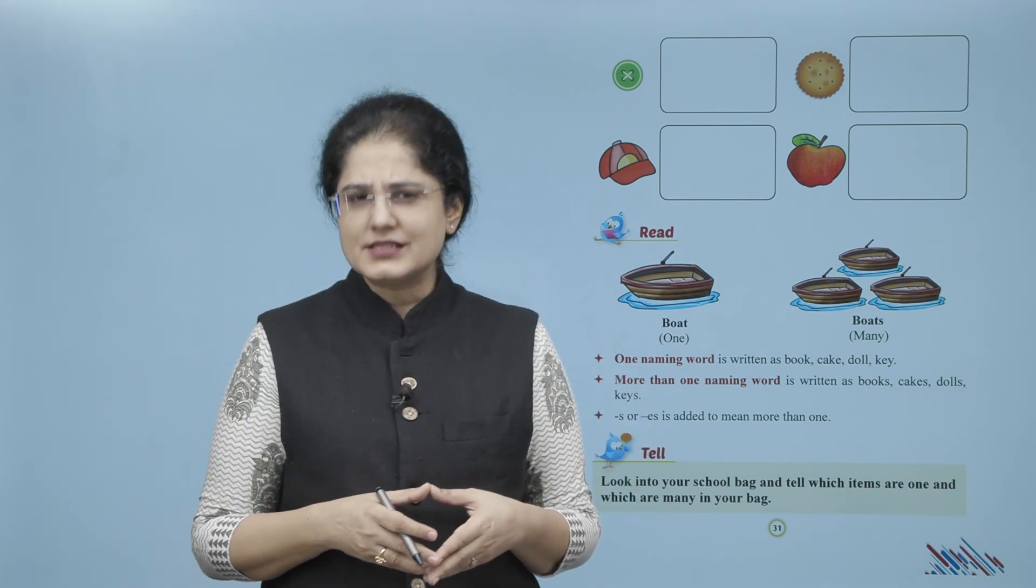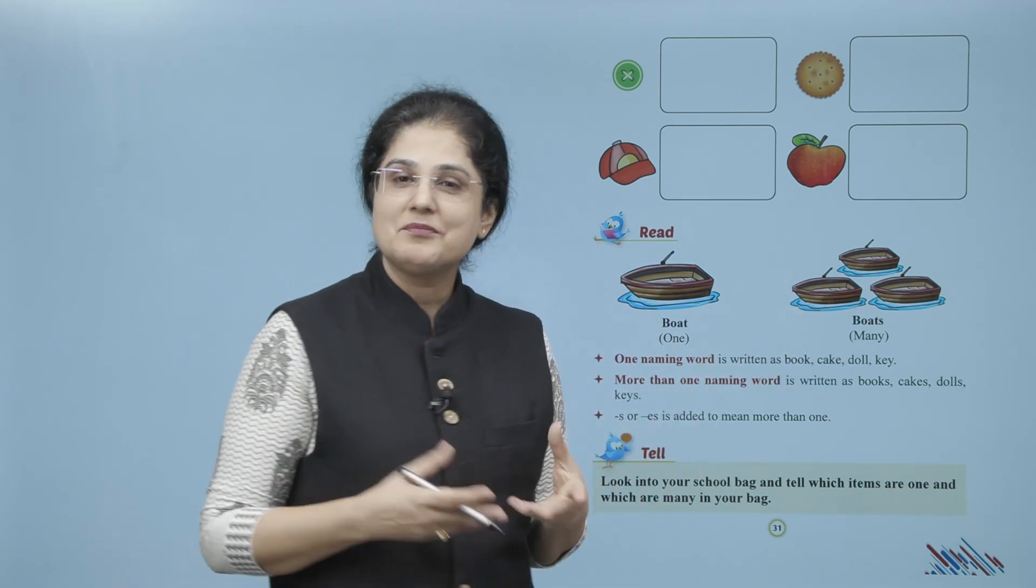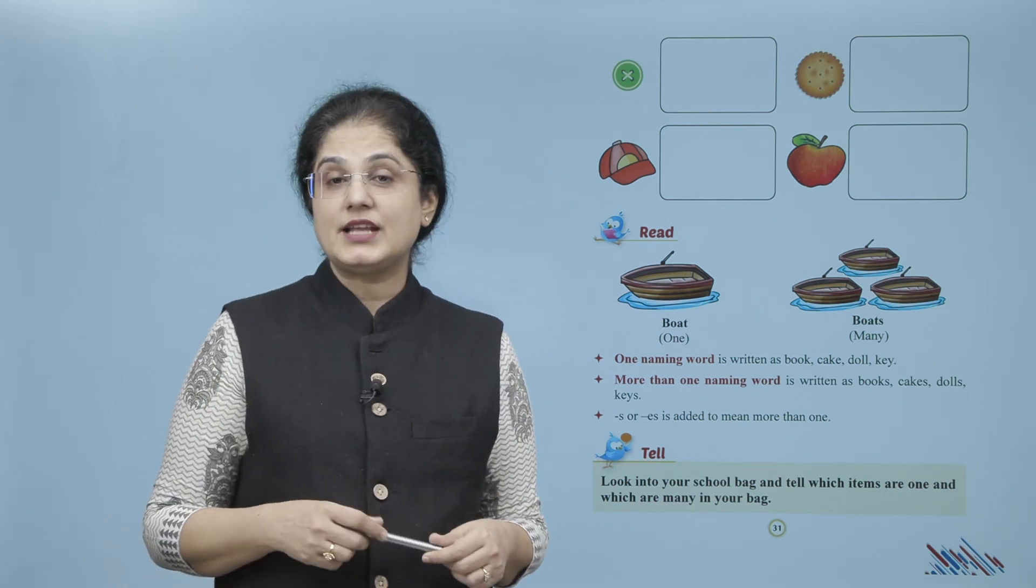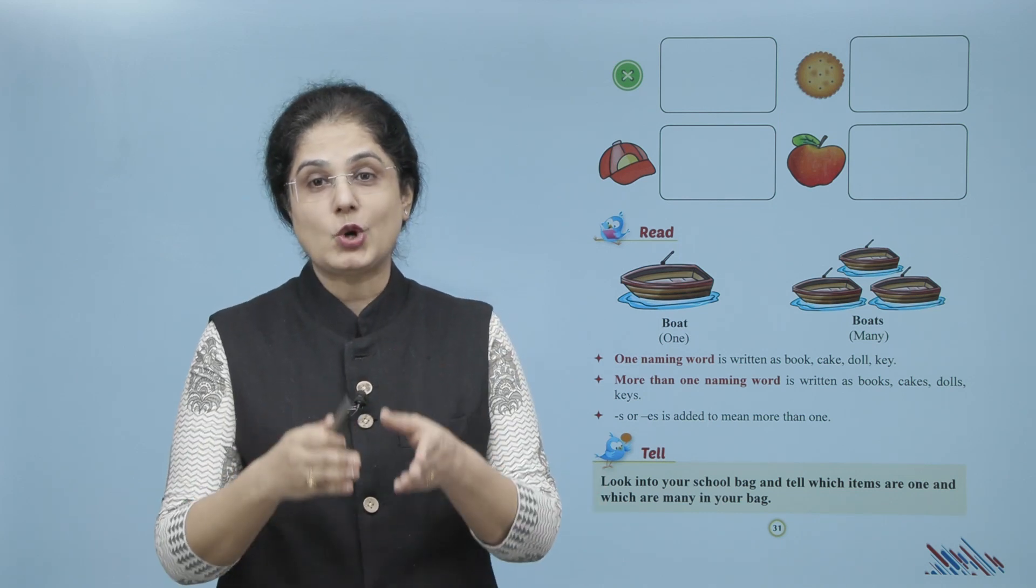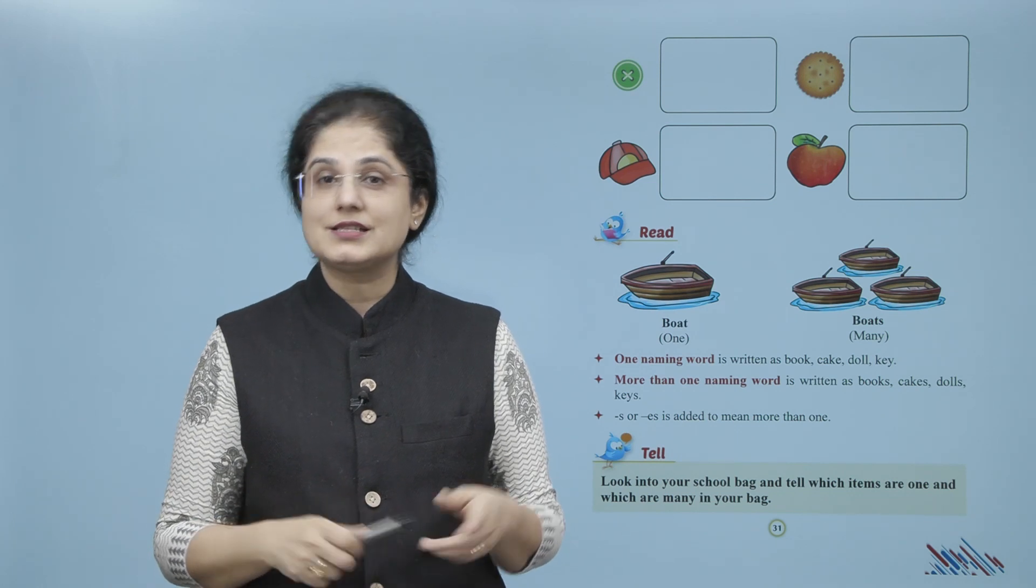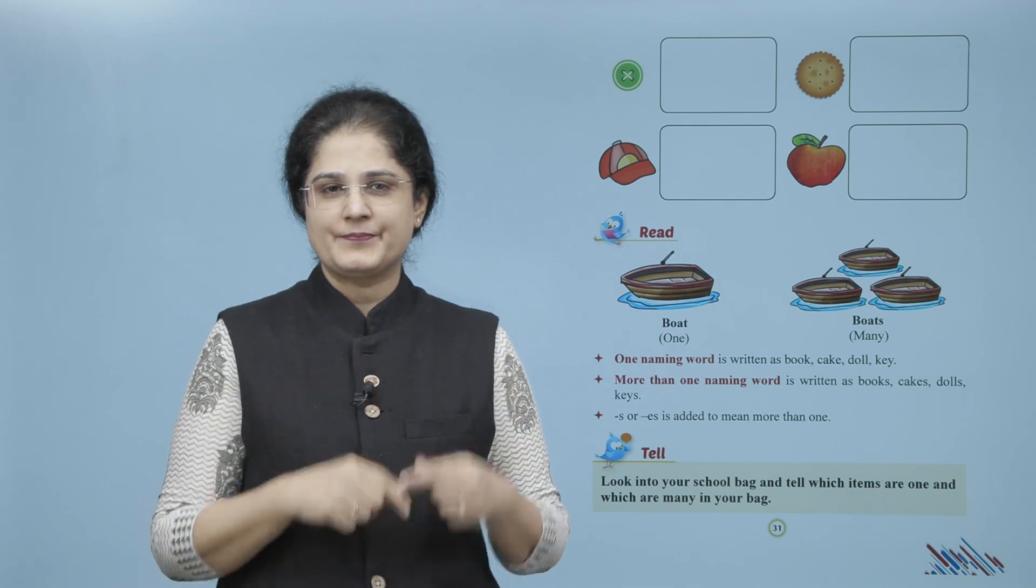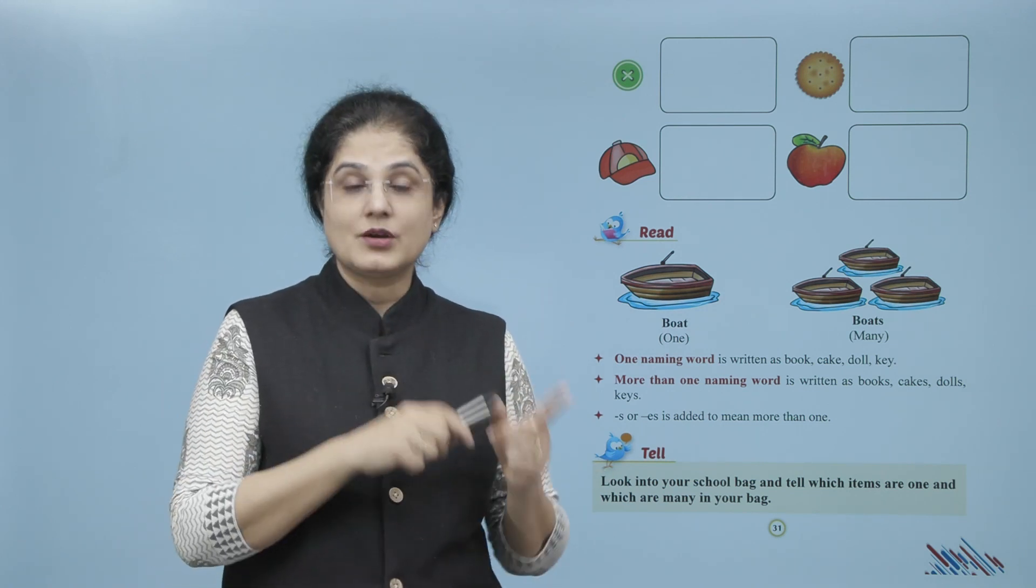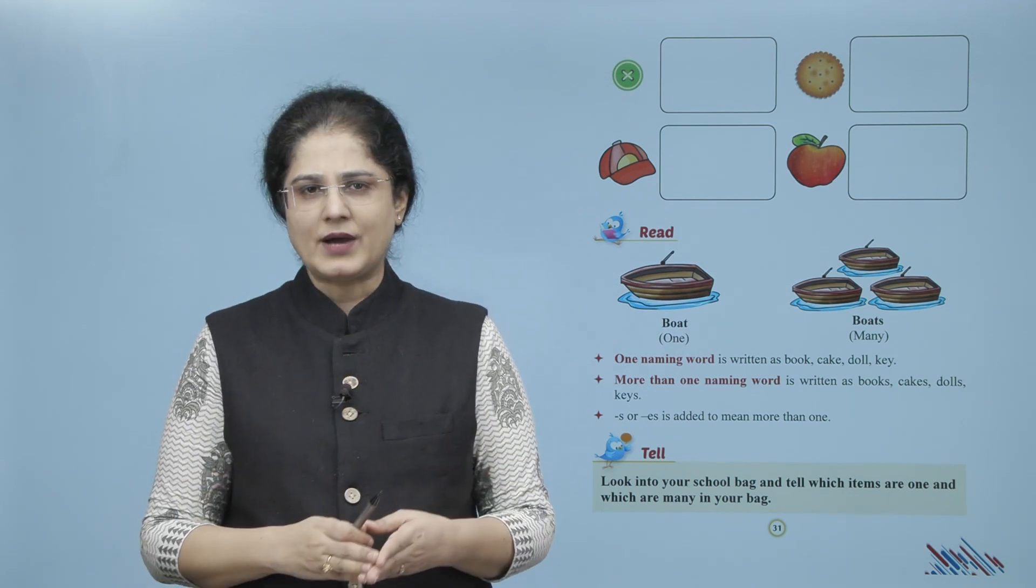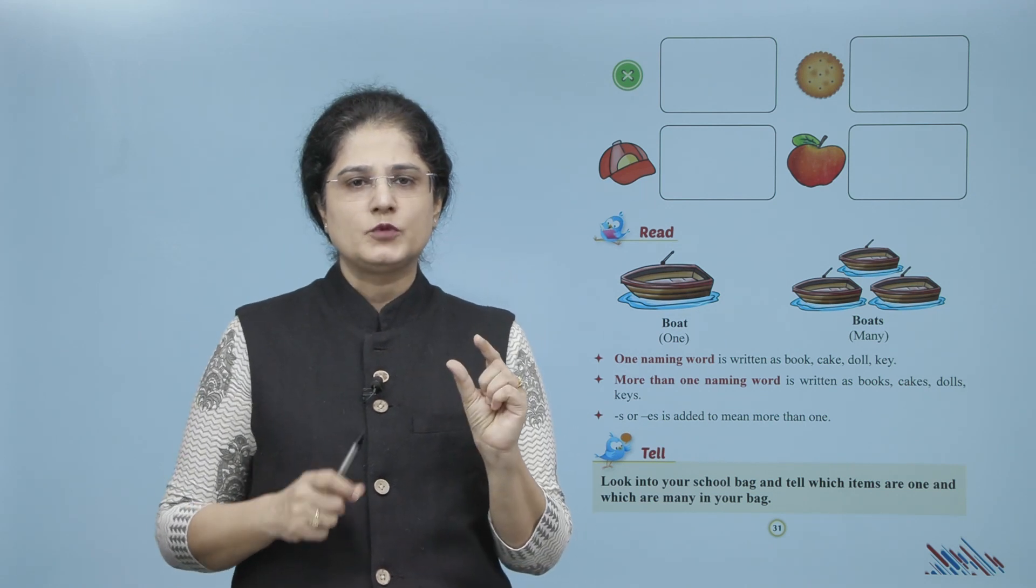Now let us read. One boat, many boats. One naming word is written as book, cake, doll, key. More than one naming word is written as books, cakes, dolls, keys. To hum kya karna hai? S or ES is added to mean more than one.